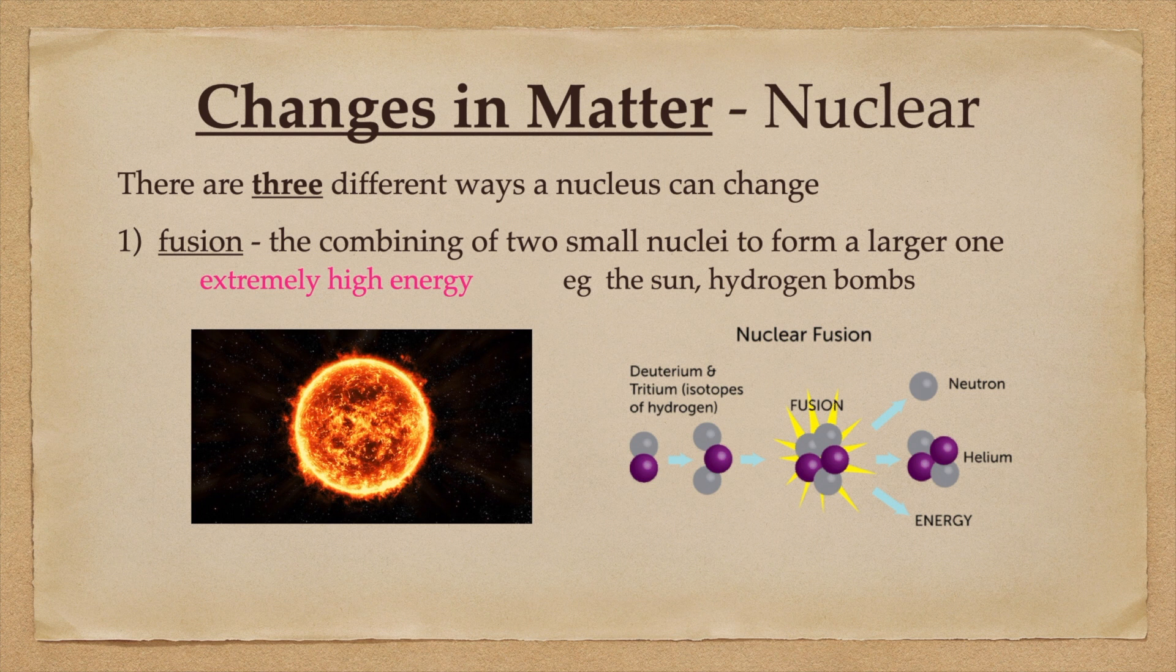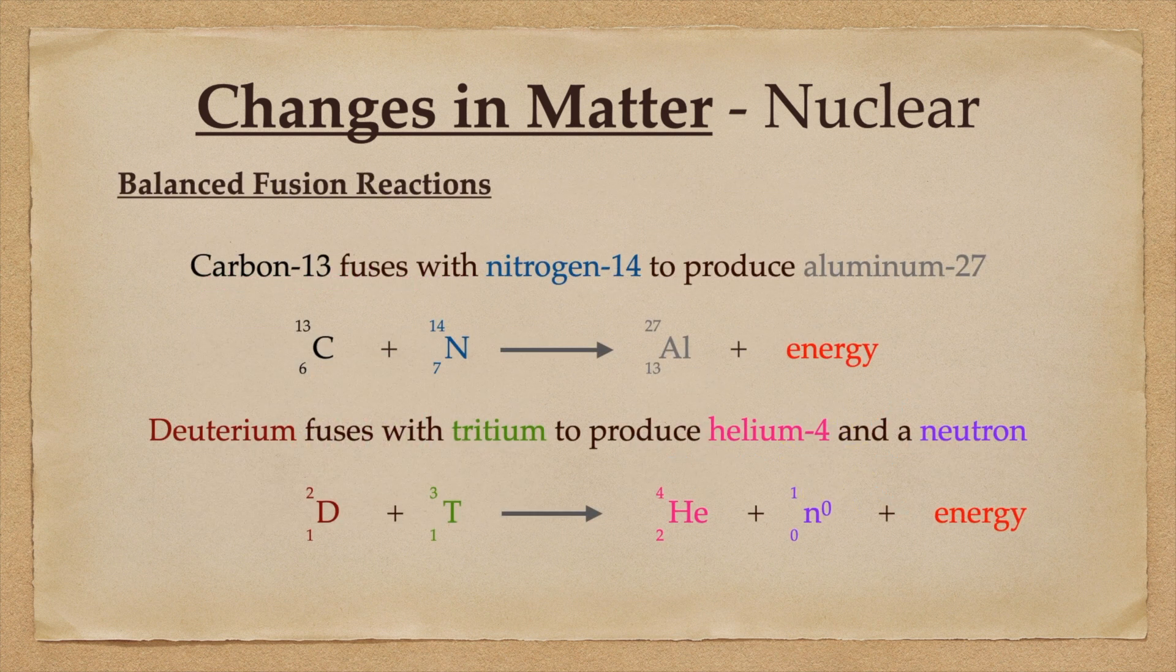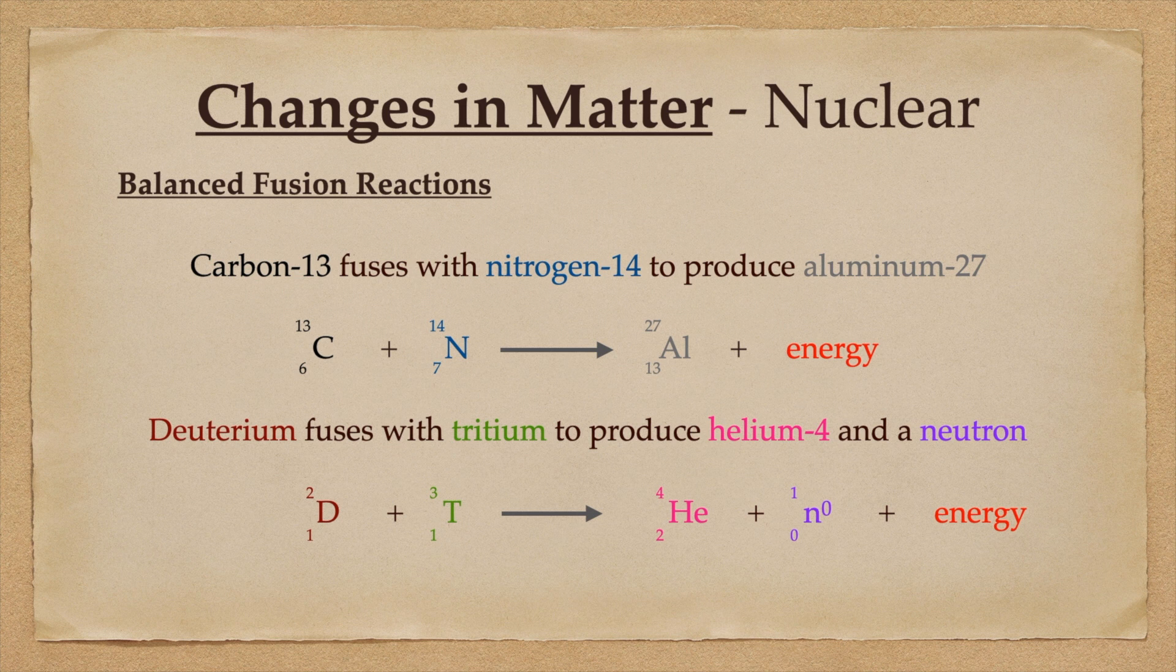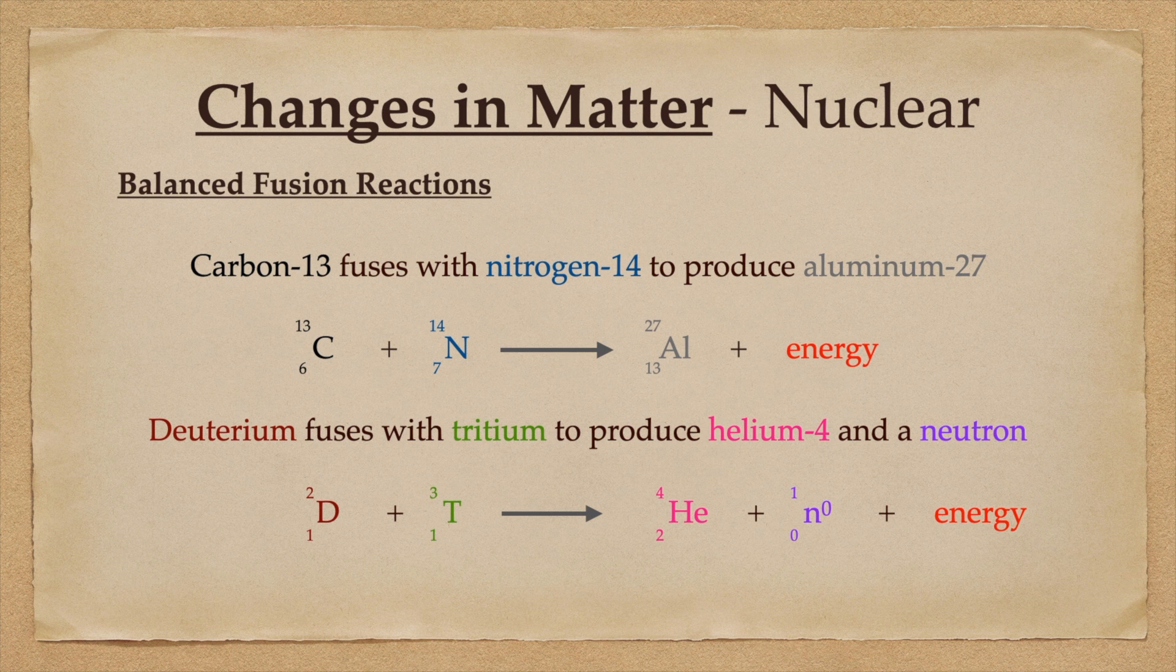Some balanced fusion reactions include: if carbon-13 fuses with nitrogen-14, it can produce aluminum-27. Note that the masses add up, 13 and 14 make 27, and the protonic charge adds up as well. Six and seven equals 13, therefore this is now aluminum.